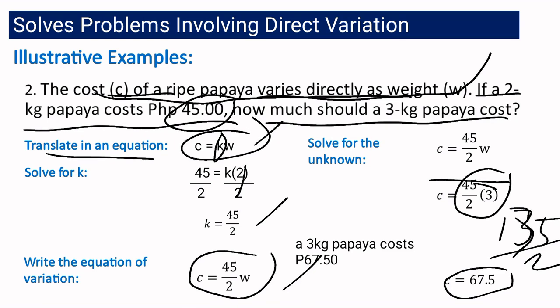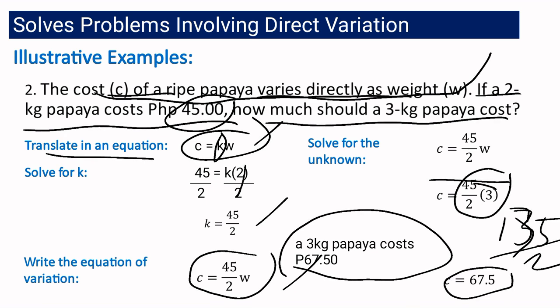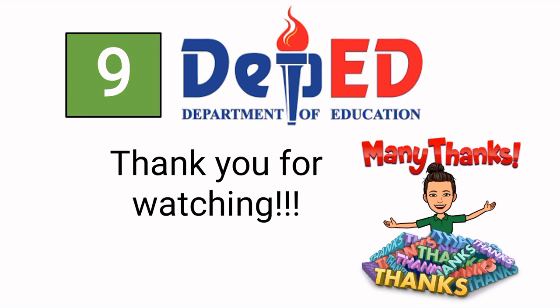A 3kg papaya costs 67 pesos and 50 centavos. As you can see, a 2kg papaya costs 45 pesos, and with the higher weight, the price is also higher at 67.50. It's all about direct variation — how to illustrate it, how to translate it, and how to solve problems involving direct variation. That's it for today. Thank you for watching.